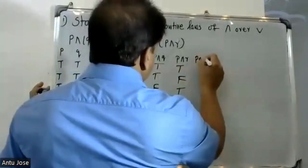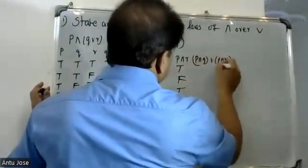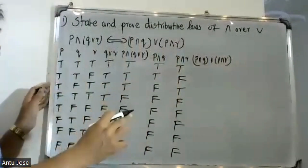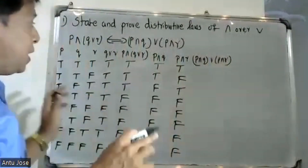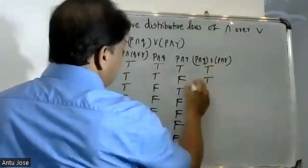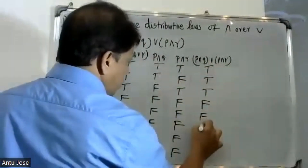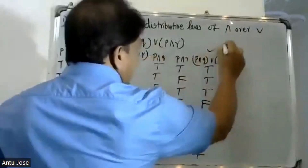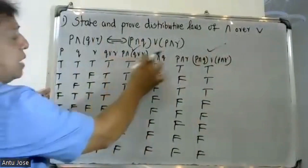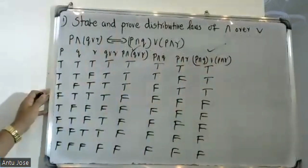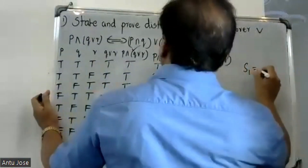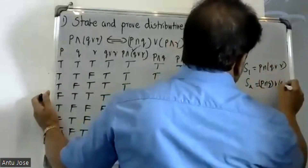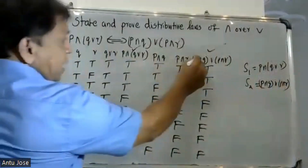Statement S1 is P and (Q or R), and statement S2 is (P and Q) or (P and R). S1 is equal to S2. The same truth values work for S1 and S2.